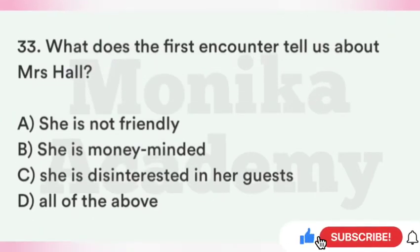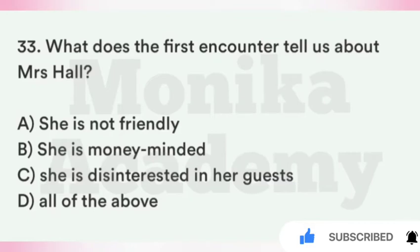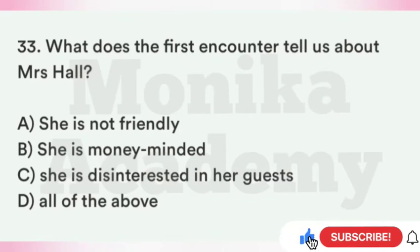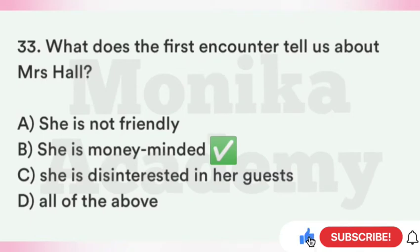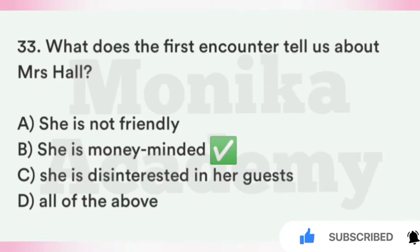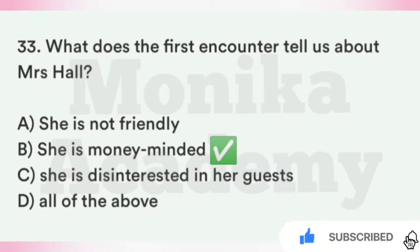Question 33: What does the first encounter tell us about Mrs. Hall? Option A: She is not friendly. Option B: She is money-minded. Option C: She is disinterested in her guest. Option D: All of the above. The correct answer is B, She is money-minded — first encounter से पता चलता है कि Mrs. Hall का main focus money पर था, उन्होंने सिर्फ यह देखा कि Griffin ने advance में पैसे pay कर दिए थे.